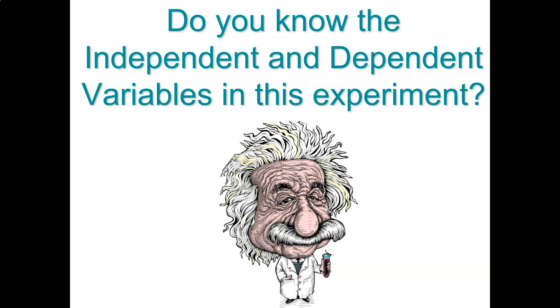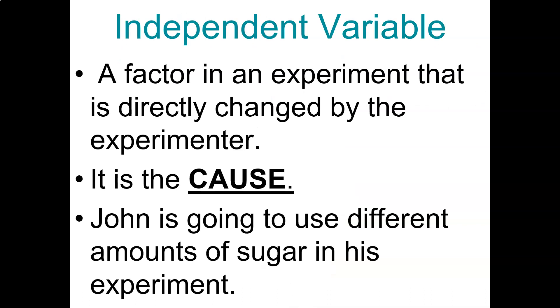I wonder if you guys know what the independent and dependent variable for this experiment would be. Remember, the independent variable is the cause of change, is what we're going to change directly. And the dependent variable is what's going to change as a result. It is the effect of change. So what are we going to change directly? We're going to change the amount of sugar. A factor within the experiment that is changed directly by the experimenter is the cause of change. Johnny is going to use different amounts of sugar, and that is going to be the independent variable, what he's changing directly.